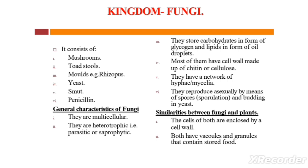Now, what are the general characteristics of Kingdom Fungi? Number one, they are multicellular — meaning their body is made up of many cells. Number two, they are heterotrophic — that is, they have either a parasitic or saprophytic mode of nutrition.